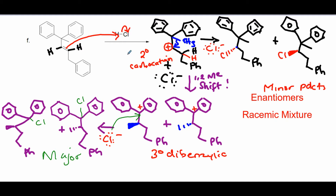In this example, you want to put a plus charge next to the most substituted carbon so you can do a shift and end up with a di-benzylic carbocation — stabilized twice by resonance. You don't want the plus charge on the other position. So grab the hydrogen using the pi bond, put the hydrogen onto this carbon, and the plus charge goes to the adjacent carbon.